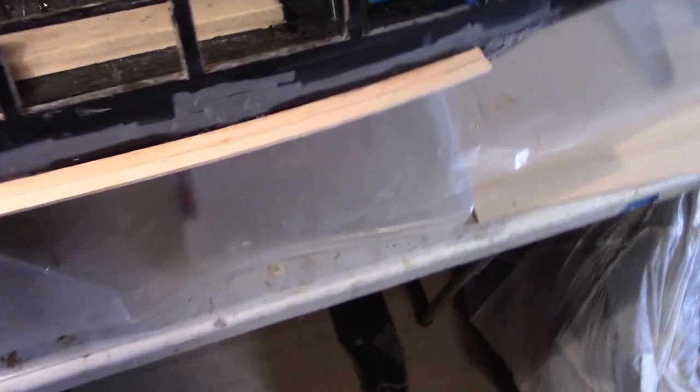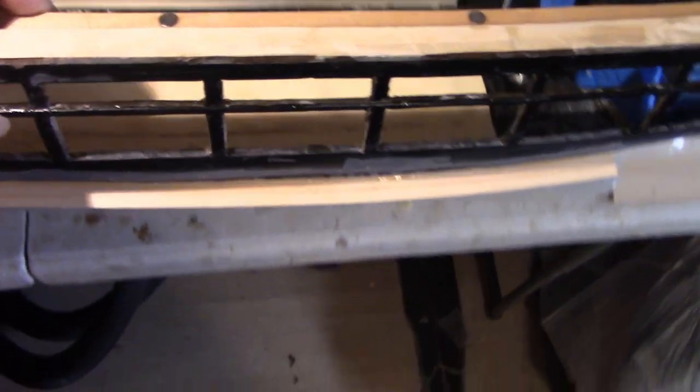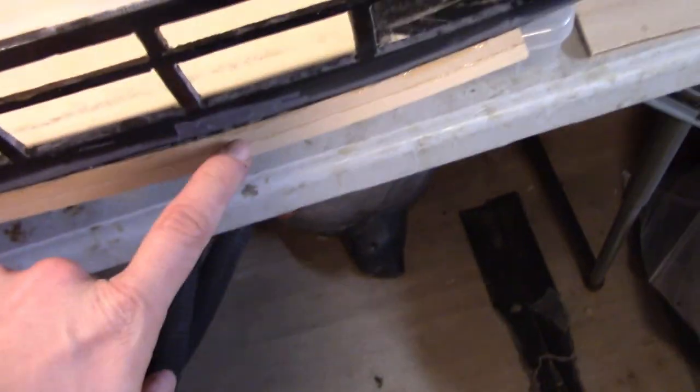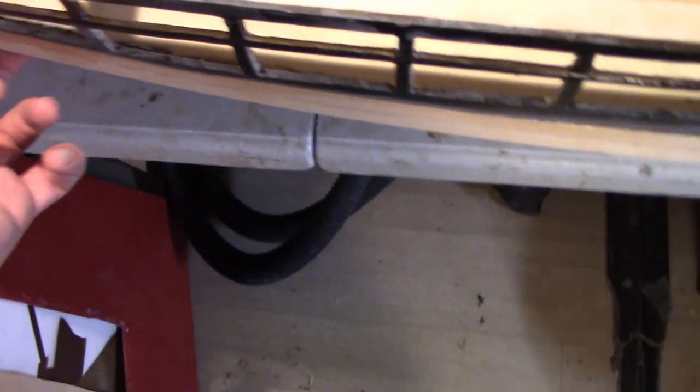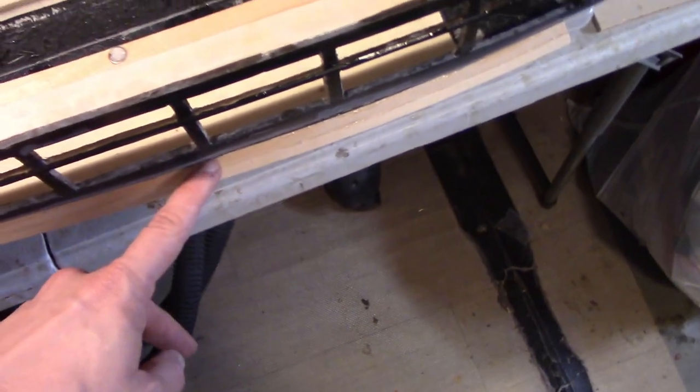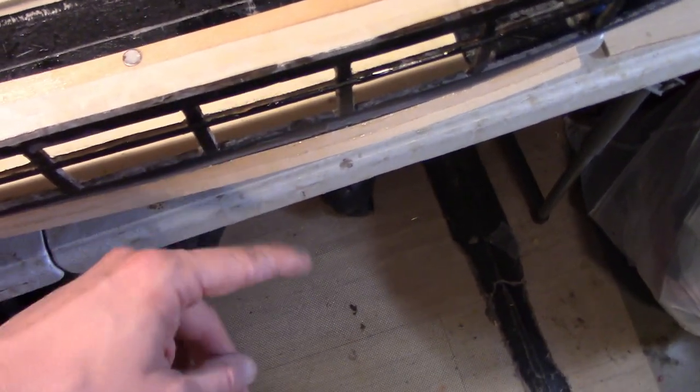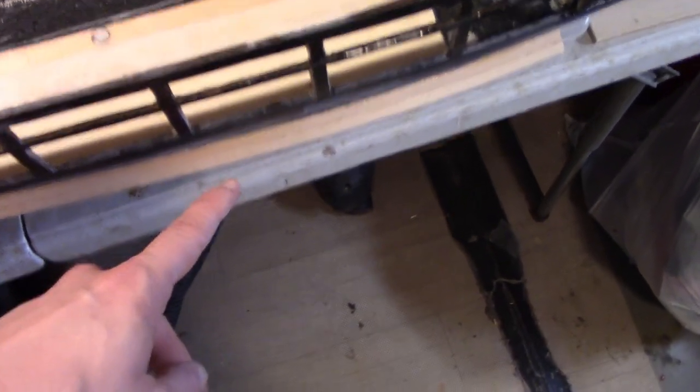So now the next step, I'm going to put some tape over this edge, and then fiberglass it from the underside. The tape will be to prevent epoxy from leaking out from underneath, because there are kind of some gaps because of the bend.